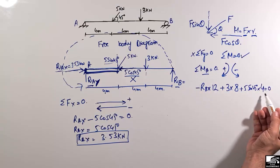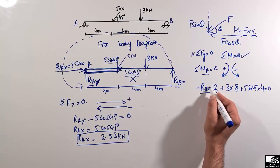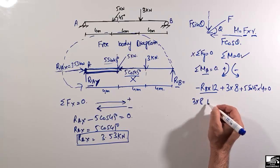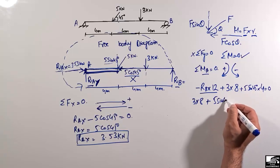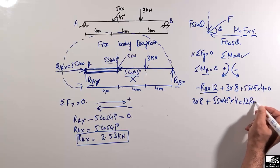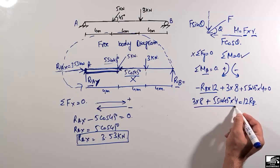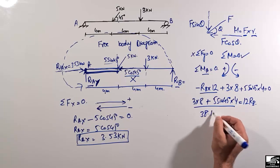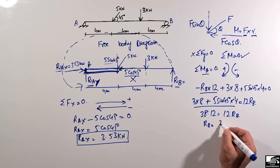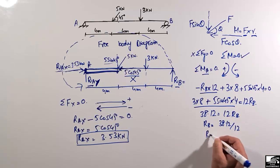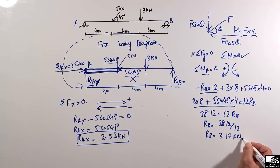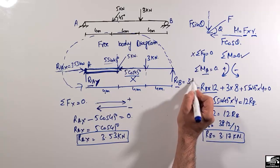Summation of moments about A equals zero: −RB × 12 + 3 × 8 + 5·sin(45°) × 4 = 0. Shifting RB to the right side: 3 × 8 + 5·sin(45°) × 4 = 12·RB, giving 38.12 = 12·RB. Therefore RB = 38.12 ÷ 12 = 3.17 kilonewton.